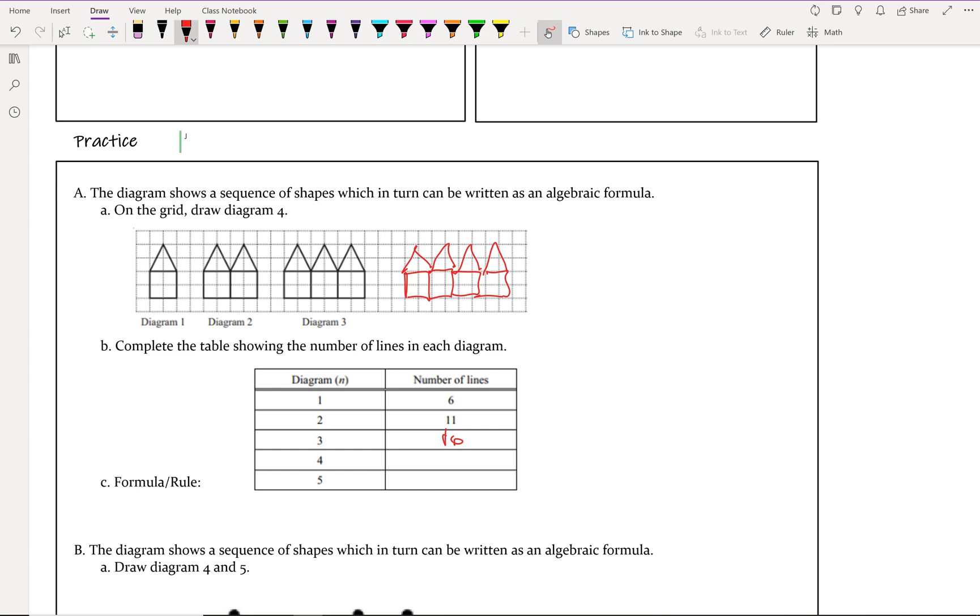And then diagram four, I made one, two, three, four, five, six, seven, eight, nine, ten, eleven, twelve, thirteen, fourteen, fifteen, sixteen, seventeen, eighteen, nineteen, twenty, twenty-one.